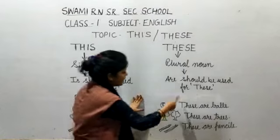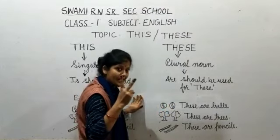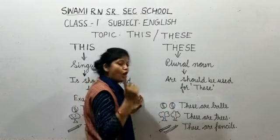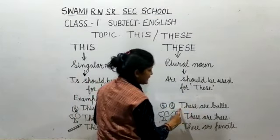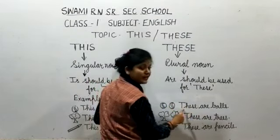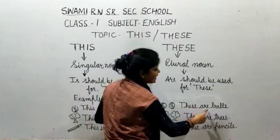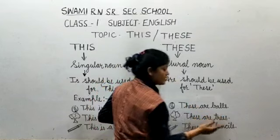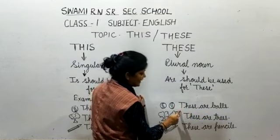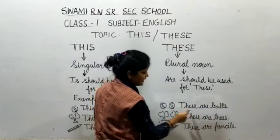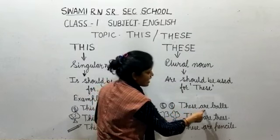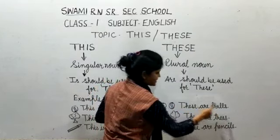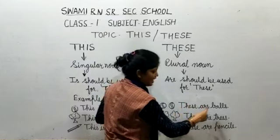On the other side, how many balls are here? Two balls are here, so we will use 'these'. All of you read with me: These are balls.